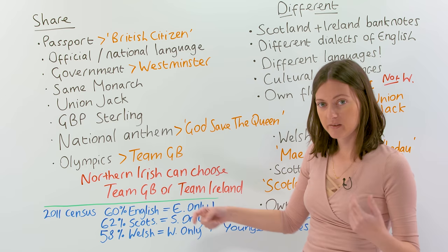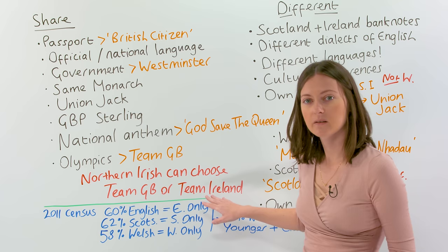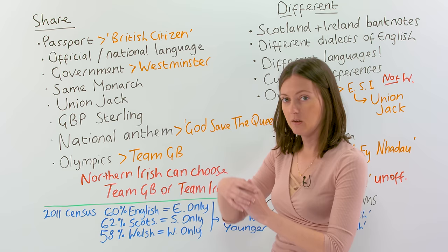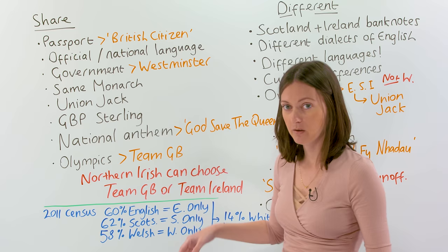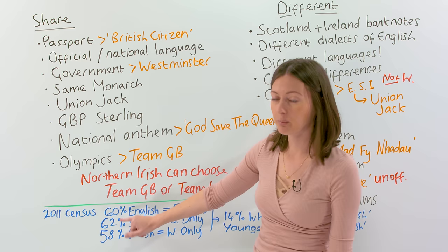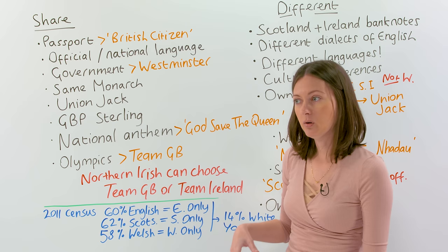62% of Scottish people consider themselves to be Scottish only — that's slightly more than in England. This is interesting because there are people in Scotland who wish for their own independence from the United Kingdom — they would like to separate, and many of them would like to join the European Union on their own. So in Scotland, people are slightly more patriotic or nationalistic, loving their country first before the United Kingdom.